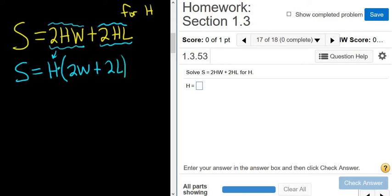Almost there. H is being multiplied by all of the stuff over here. So all we do is divide by all of that stuff. Divide both sides by 2W plus 2L.